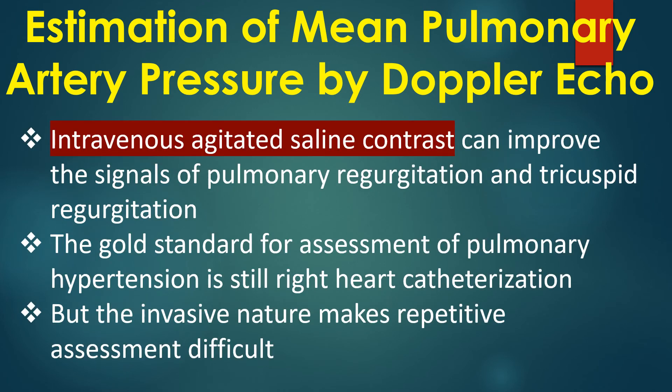Intravenous agitated saline contrast can improve the signals of pulmonary regurgitation and tricuspid regurgitation. The gold standard for assessment of pulmonary hypertension is still right heart catheterization, but the invasive nature makes repetitive measurement difficult.